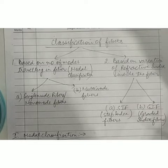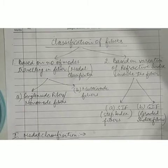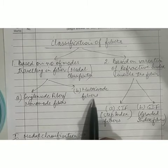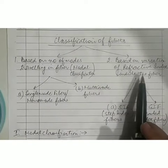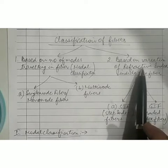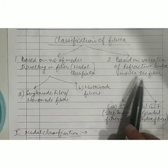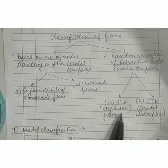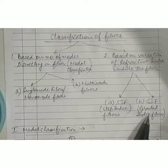In the first category, where we classify fibers depending on the number of modes, we have two types: the first is called single mode or monomode fibers, and the second is called multimode fibers. In the second classification based on variation of the refractive index inside the fiber core, we again have two types: step index fibers or SIF, and graded index fibers or GIF.